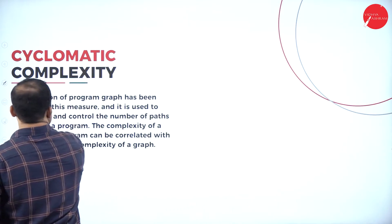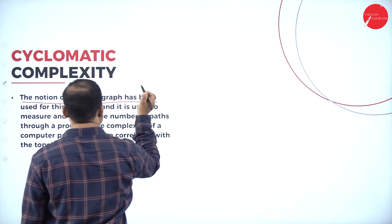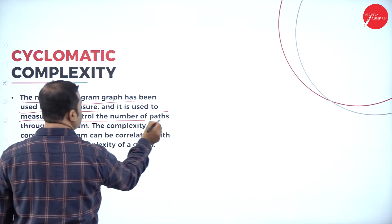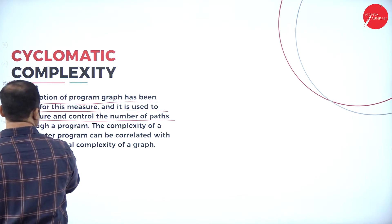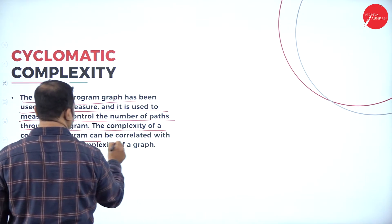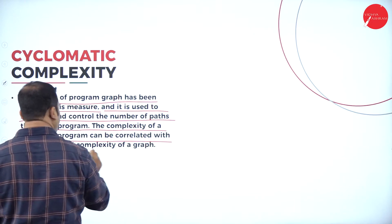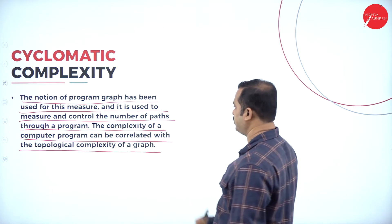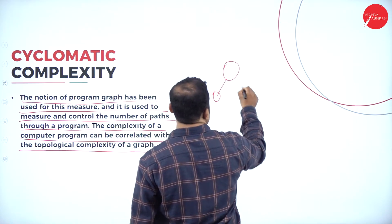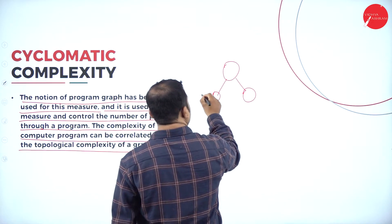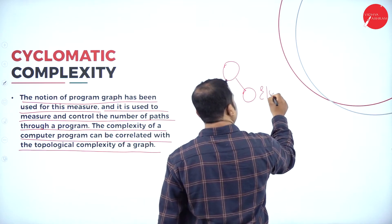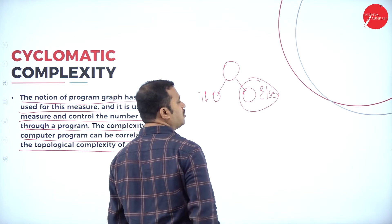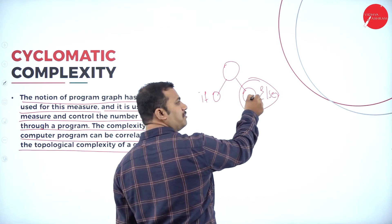The notion of cyclomatic complexity is represented by the graph used for this measure, and it is used to measure and control the number of paths through a program. The complexity of a computer program can be correlated with the topological complexity of a graph. For example, with a conditional graph, control moves to the if block or to the else block, and this is considered for the complexity measure.